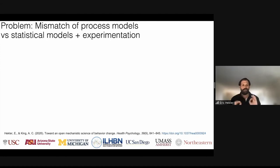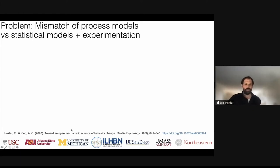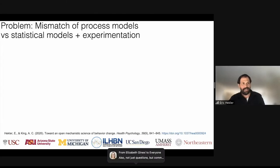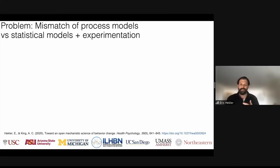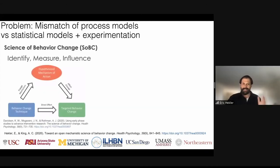Abby and I wrote a commentary together discussing moving towards open mechanistic science of behavior change, in response to the science of behavior change work. I'm going to be doing some critiques of it, but I also want to highlight there's a lot of brilliance to it — it's forcing us as a science to really start thinking carefully about how we build a robust and rigorous science. The short summary is that there's a mismatch between the level of complexity that exists compared to the statistical models and the experimentation that's actually taking place.